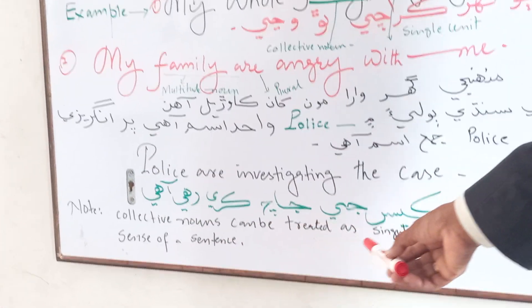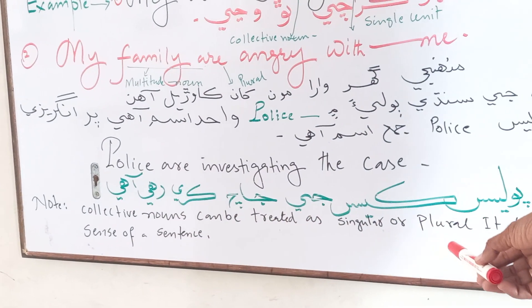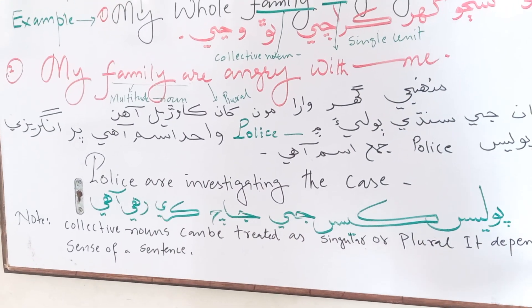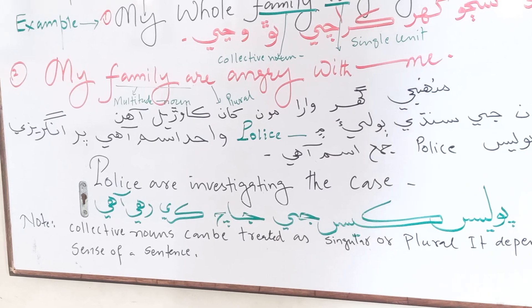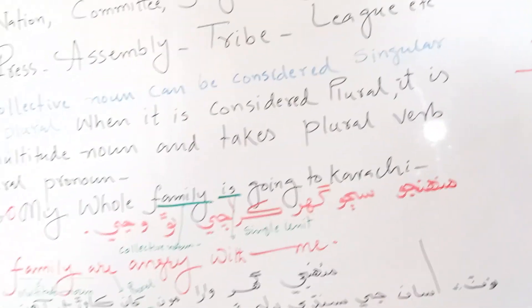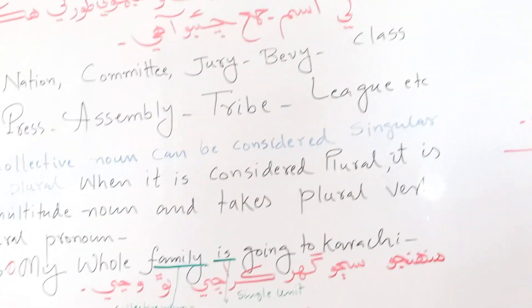Collective nouns can be treated as singular or plural because it depends on the sense of the sentence. The sense of the sentence determines how it can be used.